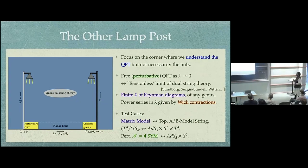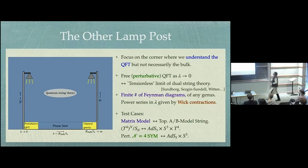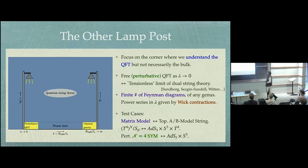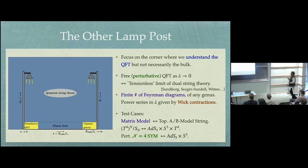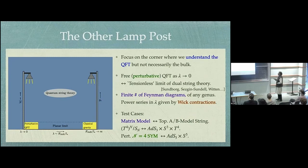The focus comes from a somewhat simple observation: when considering perturbative quantum field theory, there are a finite number of Feynman diagrams at any genus that contribute to any given correlator. I'll try to mind this observation and bring out its significance through what we've begun to learn through several test cases around this point. The one we understand best is the symmetric product CFT being dual to a tensionless limit of ADS3.